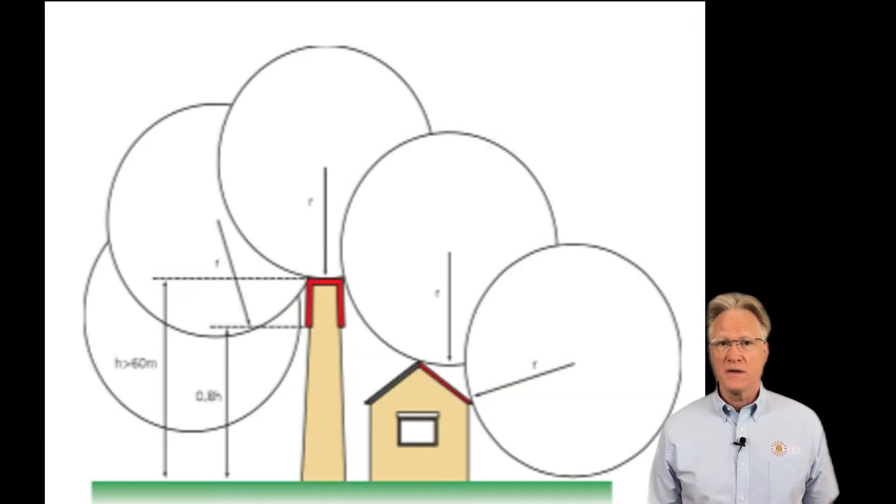I prefer the rolling sphere method. Here is the rolling sphere design method in picture form. The idea is to have the arc of the sphere only touch the lightning rods as you roll it over the structure you're trying to protect. It should always be suspended by the lightning rods and never touch anything you wish to protect.